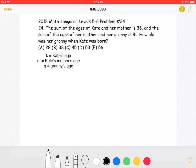The sum of the ages of Kate and her mother is 36, and the sum of the ages of her mother and her granny is 81. How old was her granny when Kate was born?